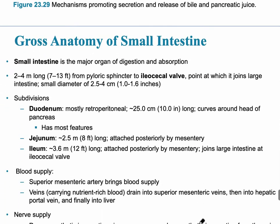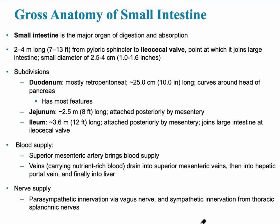The small intestine is the major organ of digestion and absorption. Some absorption occurs in the stomach — primarily water — but the primary site of nutrient absorption is the small intestine, specifically the duodenum. Water and fats are passively absorbed, but everything else requires energy. The small intestine is about 2 to 4 meters (7 to 13 feet) long, from the pyloric sphincter to the ileocecal valve.